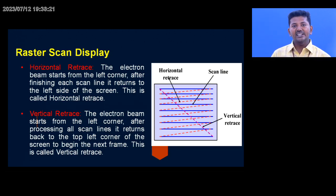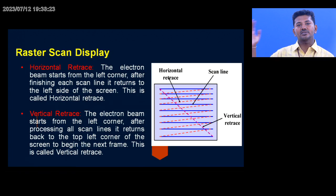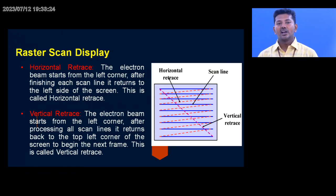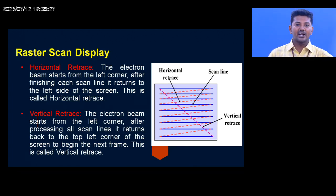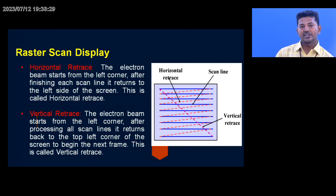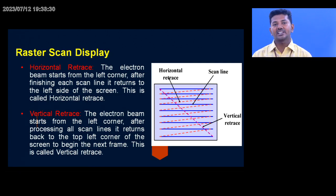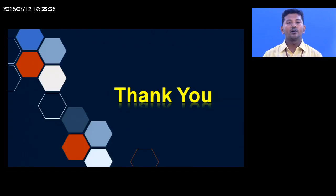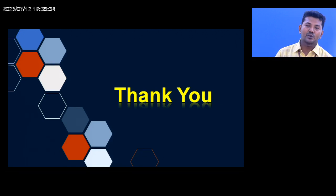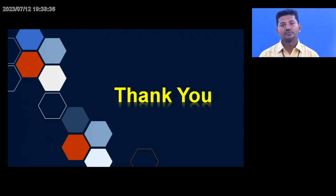In vertical retrace, it processes across the scan line and returns back to the left top corner, then starts from the next frame — that is what we call vertical retrace. This is all for today's class. Thank you all.